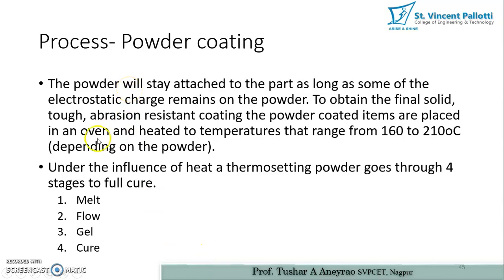In the powder coating process, the powder will stay attached to the part as long as some electrostatic charge remains on the powder. The powder is first charged with an electrostatic charge and it clings to the surface as long as this charge remains. To obtain the final solid abrasion-resistant coating, the powder-coated items are placed in an oven and heated to a temperature ranging from 160 to 210 degrees centigrade, depending on the type of powder being used.